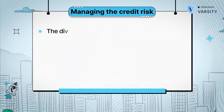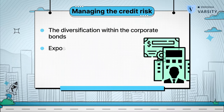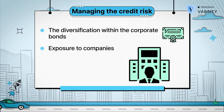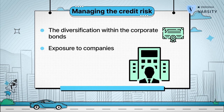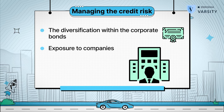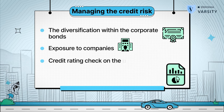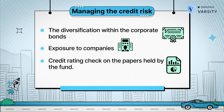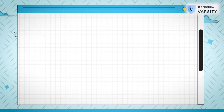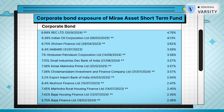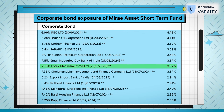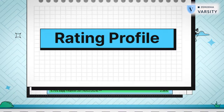How do we figure if the fund manager is managing this risk well? You need to check the diversification within the corporate bonds and the exposure to companies — there should be no high exposure to a single corporate entity; if there is, that's a red flag. You also need to check the credit rating of all the papers held by the fund. When you dig further into the corporate bond section of this portfolio, you'll find that the fund is fairly well diversified across multiple papers with no single large exposure to a particular entity.